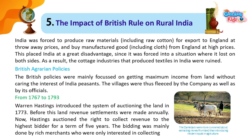British Agrarian Policies: The British policies were mainly focused on getting maximum income from land without caring for the interests of Indian peasants. The villagers were thus fleeced by the company as well as by its officials. From 1767 to 1793, Warren Hastings introduced the system of auctioning the land in 1773.